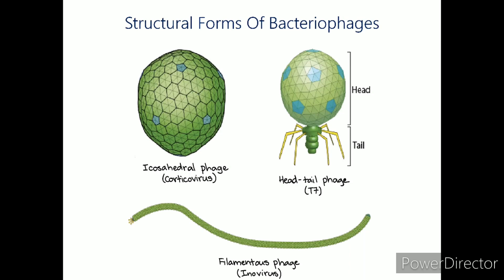Bacteriophages exist in three basic structural forms: an icosahedral head, without a tail, and a filamentous form. The genetic material of the bacteriophages can either be DNA or RNA, both of which can either be double-stranded or single-stranded. Bacteriophages are obligate intracellular parasites that remain latent outside the host cell and require host cellular machinery to conduct their metabolic activities.